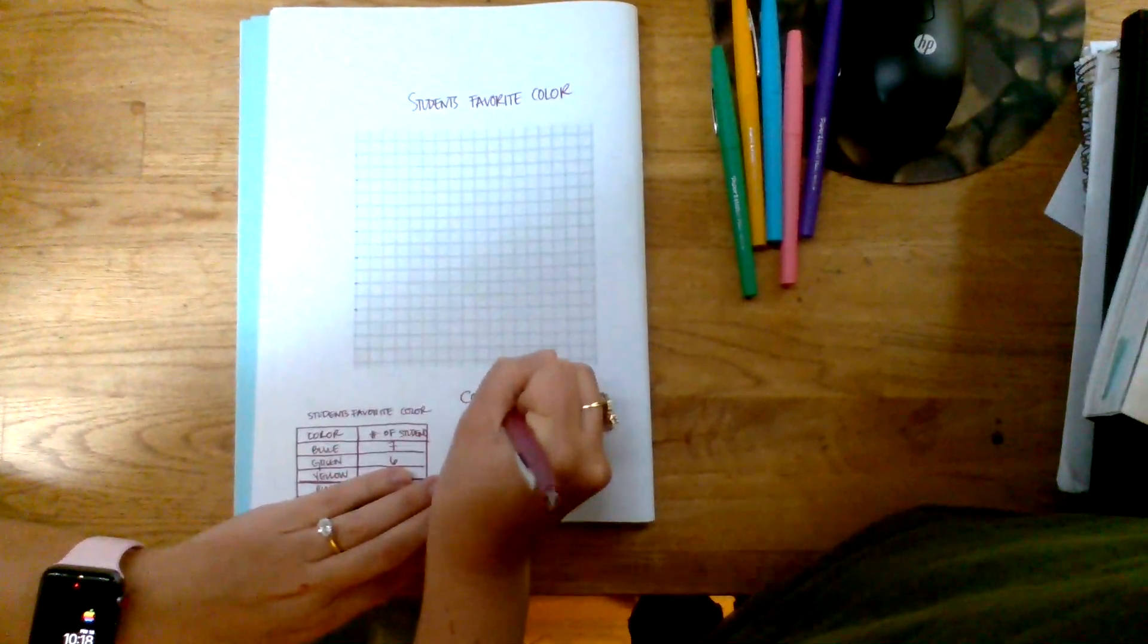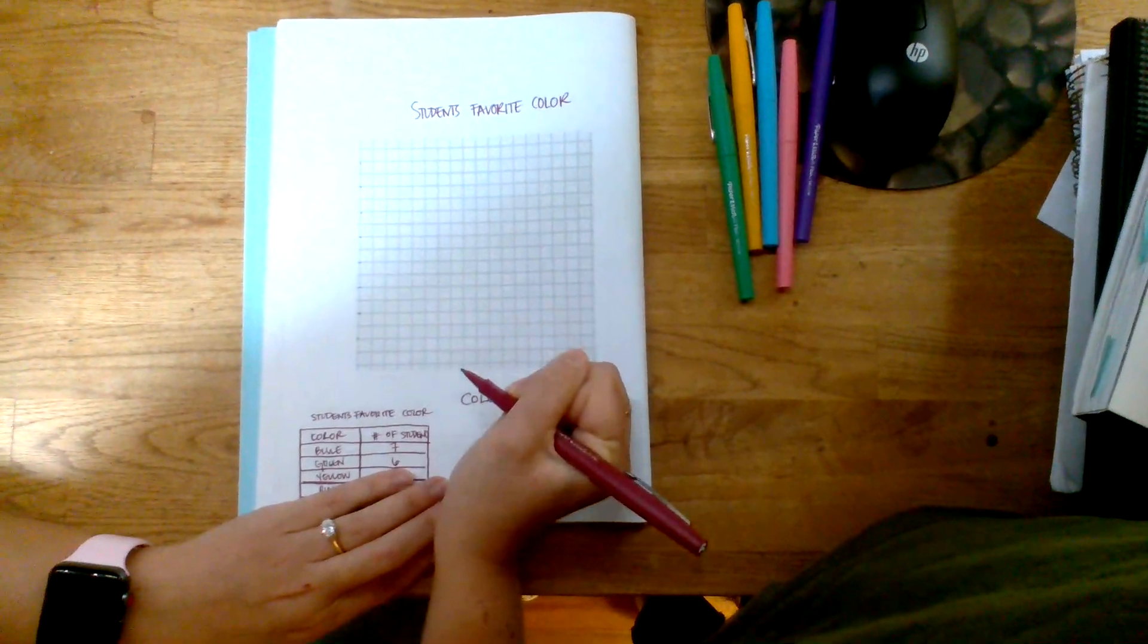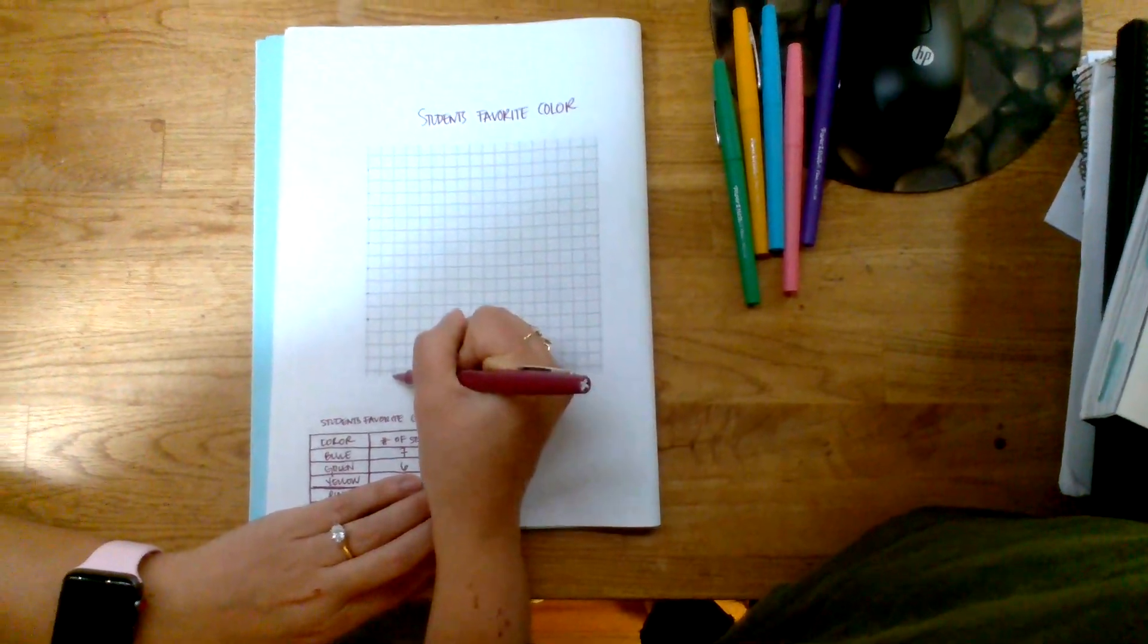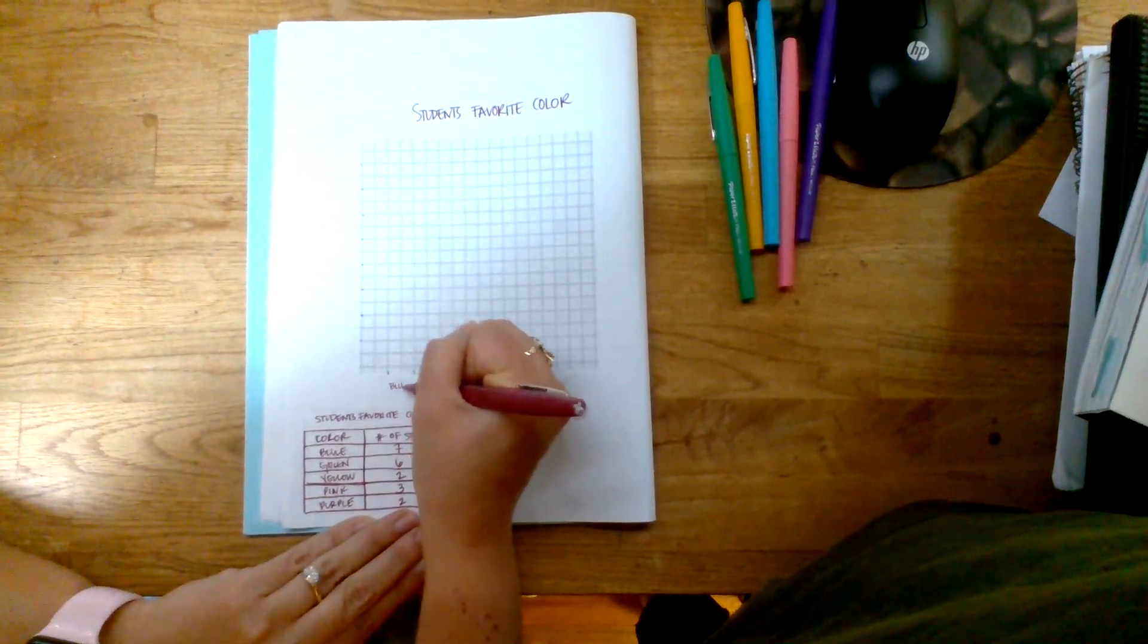Since this is a bar graph, I'm going to designate two spots for each color. So this will be blue, and I'm going to go in the same order that I have on the table: green.